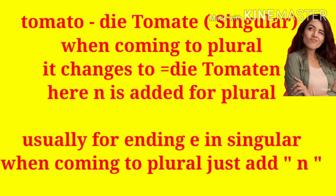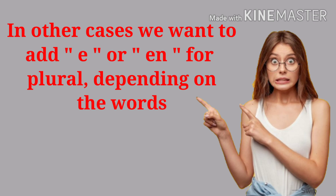Here is an important rule regarding plural: how can we easily identify and learn plural forms? Usually, for words ending in '-e' in singular, just add 'n' to form the plural. This is an important rule. For example, 'Tomate' ends in 'e,' so the plural is 'Tomaten.' In other cases, you want to add either '-e' or '-en' for the plural, depending on the word ending. We will learn this in the playlist as we cover different vocabulary words.